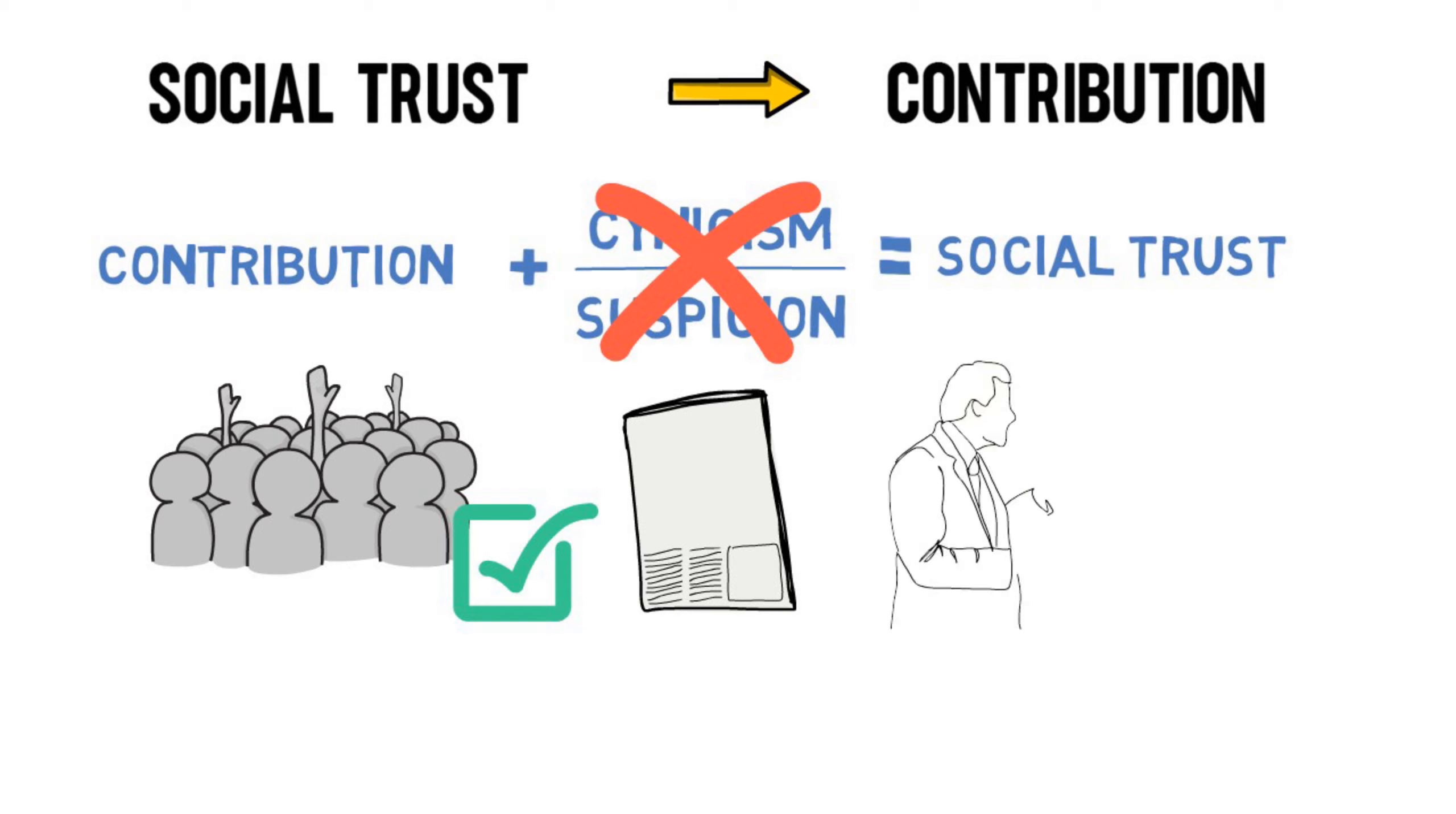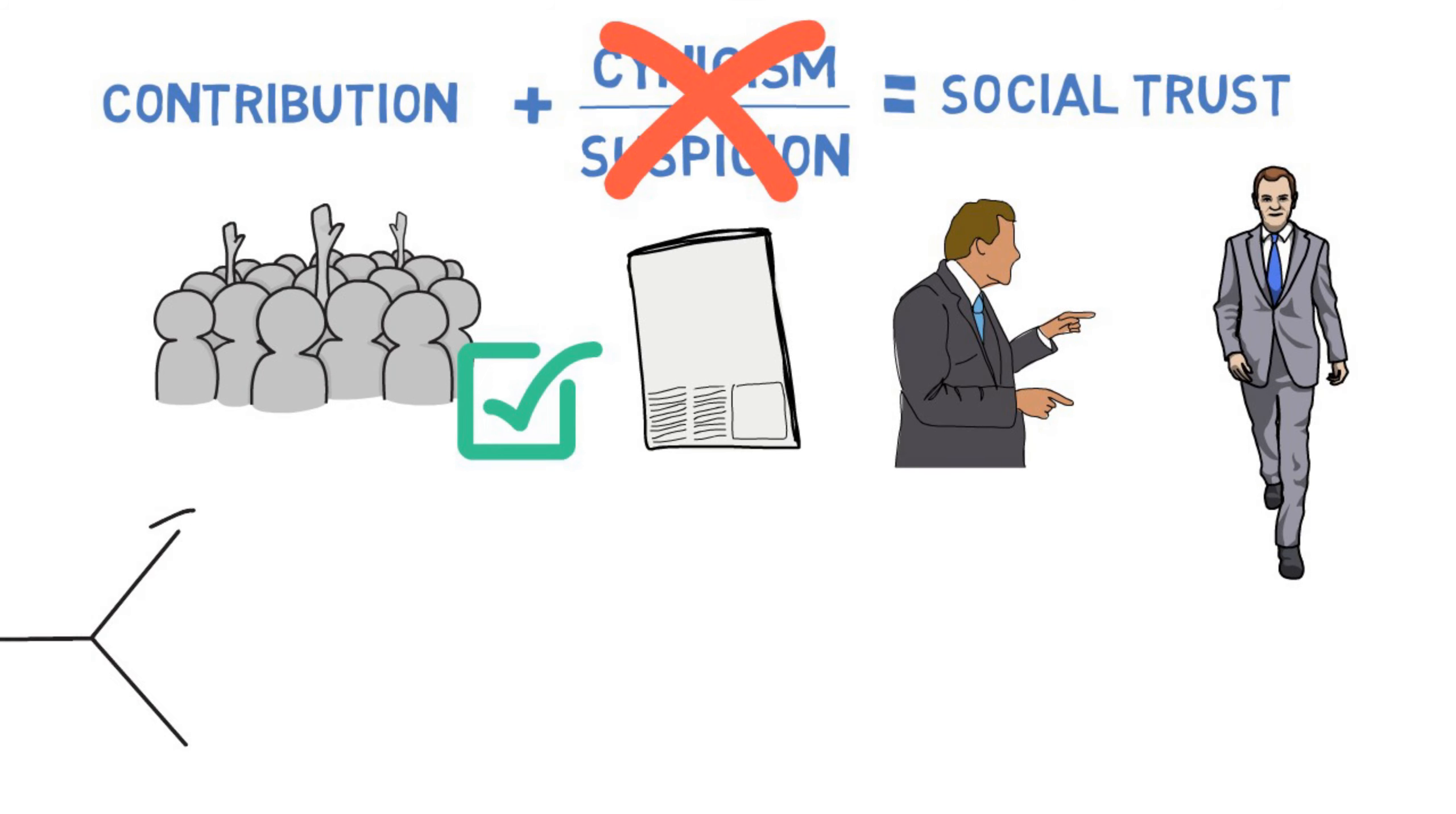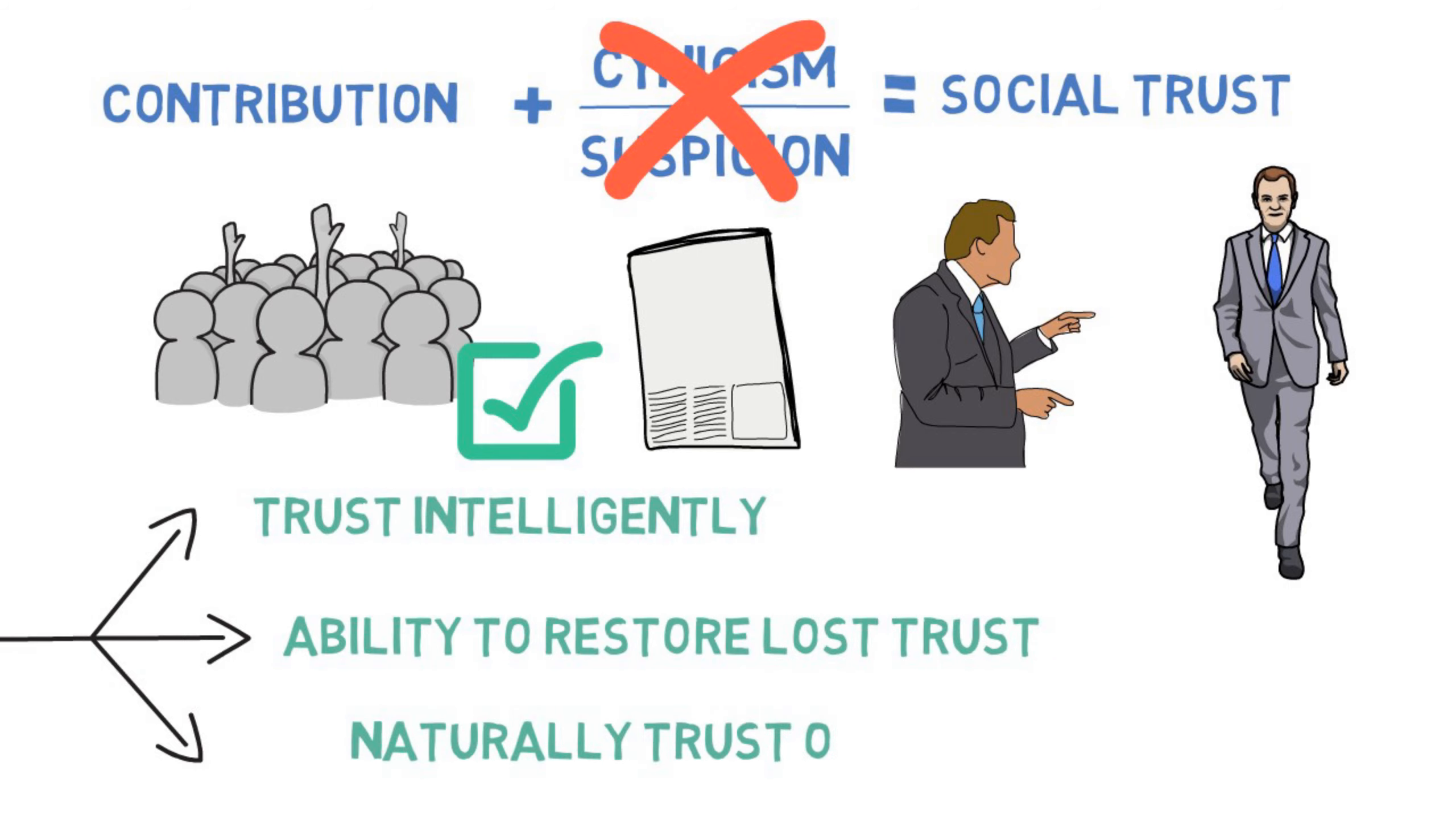The ability to inspire others is the main difference between a boss and a leader. To inspire others, you must combine the following things: You must learn to trust intelligently, have the ability to restore lost trust, and naturally trust others in all situations.